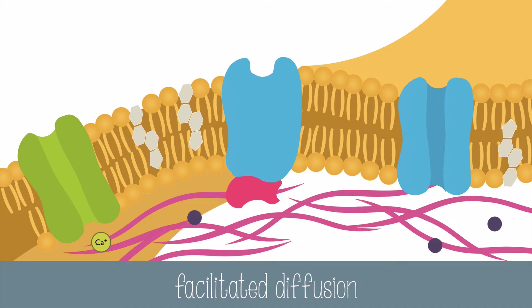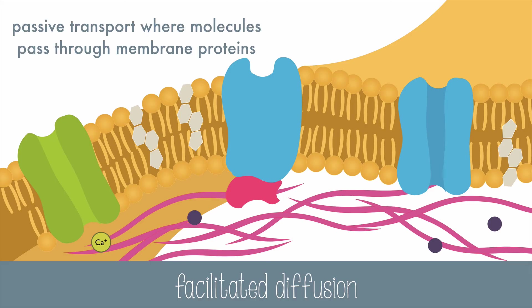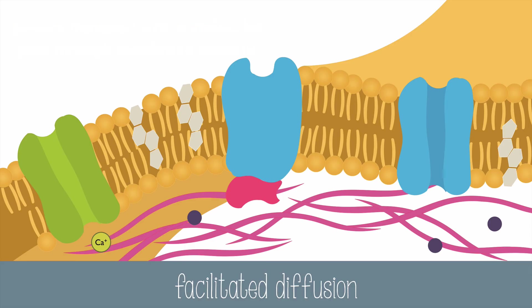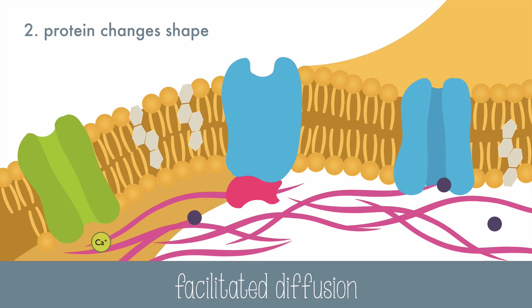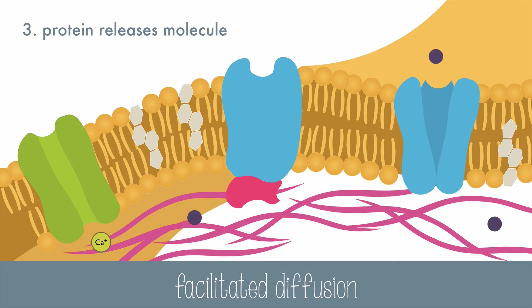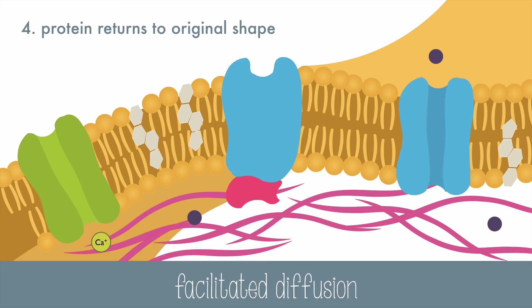Lots of molecules need a little bit of help to get through the cell membrane, either because they're too large or they're too polar to get past those hydrophobic tails. That's where facilitated diffusion comes in. It's a type of passive transport where molecules pass through the membrane proteins. The molecules pass through in four basic steps: first, the molecule binds to the carrier protein; second, the carrier protein changes shape; third, the protein releases the molecule to the outside; and fourth, the protein returns to its original shape.